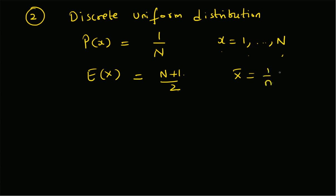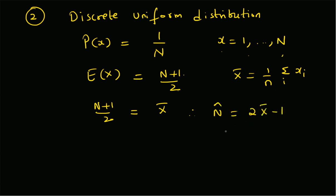From the data, given n samples, the sample mean is defined as (1/n) * summation over i of x_i. Equating these two, we have (N+1)/2 = x_bar, therefore the estimate of the parameter N is given by N_hat = 2 * x_bar - 1, that is two times the sample mean minus one.